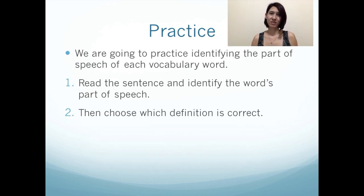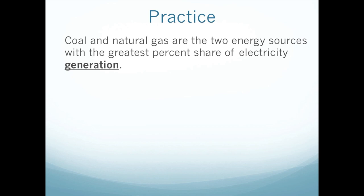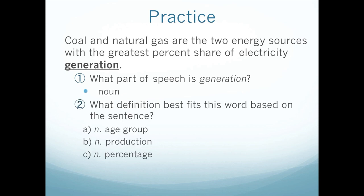Now we're going to use what you just learned — we're going to practice. I'm going to give you a sentence and I want you to identify the part of speech of each vocabulary word in the sentence. Then choose which definition is correct. Let's try this first one: Coal and natural gas are the two energy sources with the greatest percent share of electricity generation. I want you to think — what part of speech is generation? Is this a noun, verb, adjective, preposition, or adverb? If you said noun, you're correct.